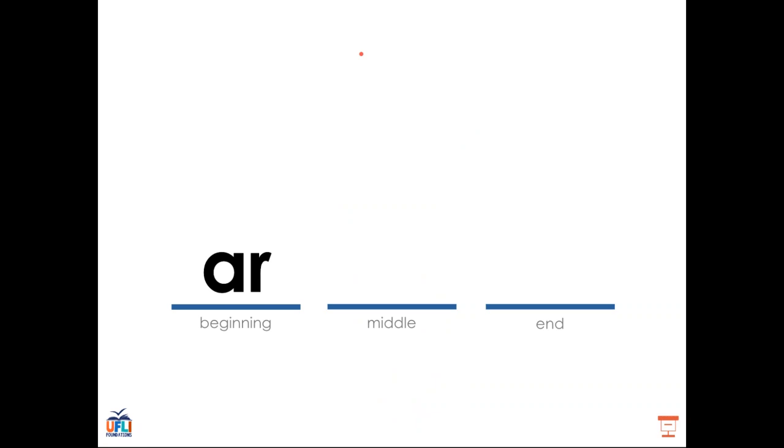Finally, we learned that AR can appear at the beginning of words as in art or arm. Regardless of where it is, AR will always make the sound R because that bossy R is coming in and changing the sound of the vowel. A no longer says ah, instead A and R together say R.